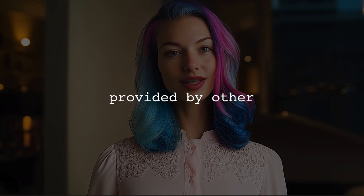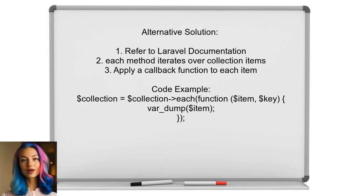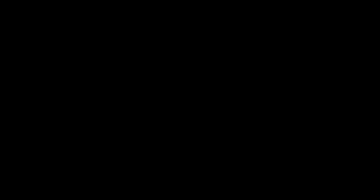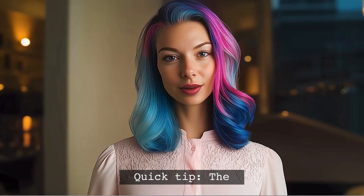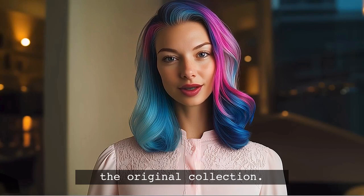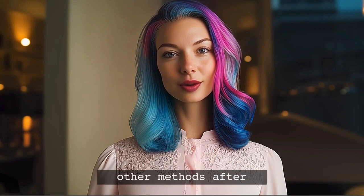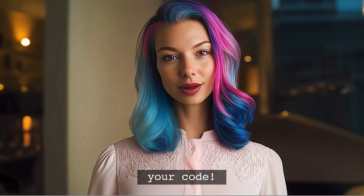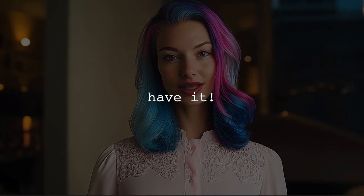Now let's look at the answers provided by other users. This user suggests checking the official Laravel documentation for the EACH function. It explains that EACH iterates over items in a collection and applies a callback function to each item — you can define what that function does, such as dumping elements or adding them to a database. Always remember that the EACH function returns the original collection, which means you can chain other methods after it, helping to streamline your code.